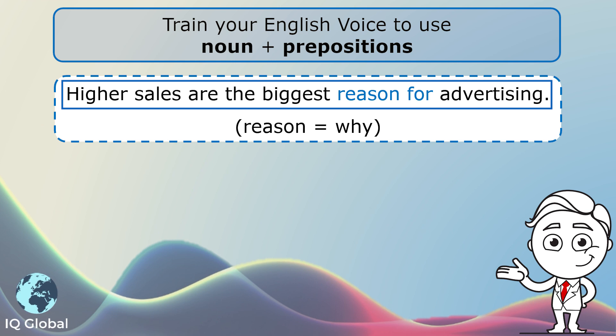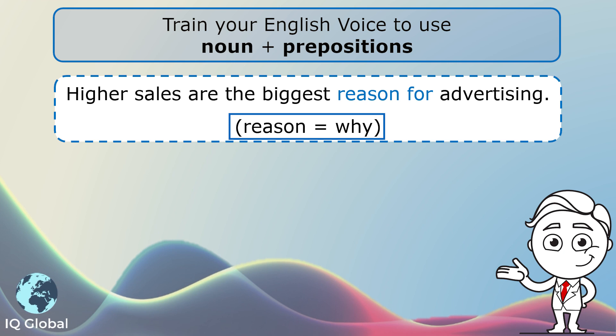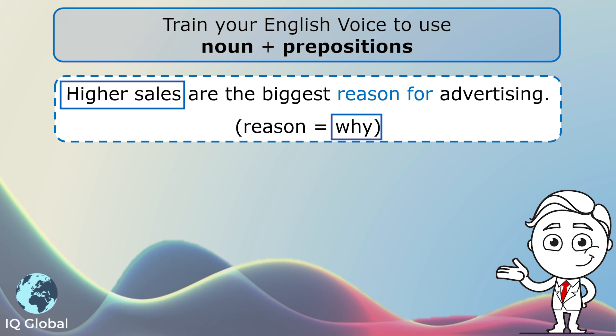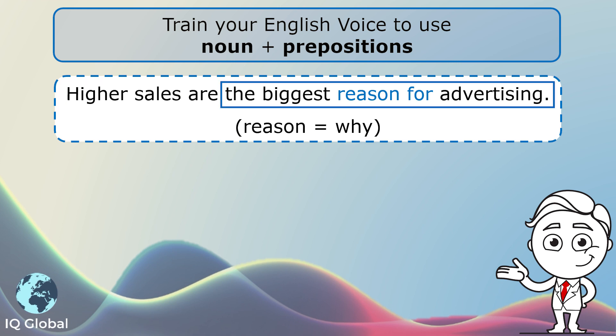Sentence two: higher sales are the biggest reason for advertising. 'Reason' is the noun and it tells us why. Here we have a relationship between higher sales and advertising — why do we advertise? Because it results in higher sales. That is the biggest reason for advertising.